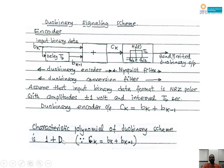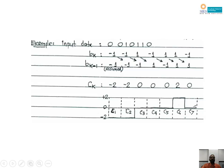The characteristic polynomial is 1+D, meaning the system is a duo binary system: present bit plus delayed bit. I am showing an example. Input data bits are 0, 0, 1, 0, 1, 1, 0. These 0s and 1s are represented in terms of voltage: 0 → -1 V, 1 → +1 V. So the voltage sequence is: -1, -1, +1, -1, +1, +1, -1.